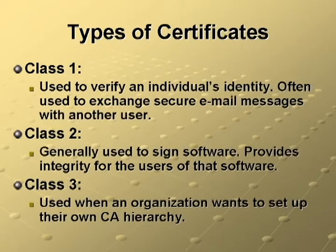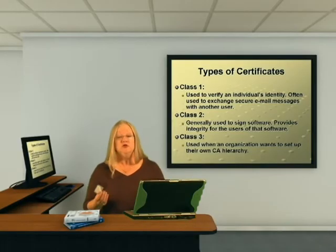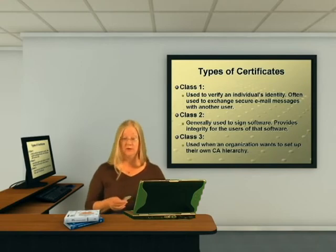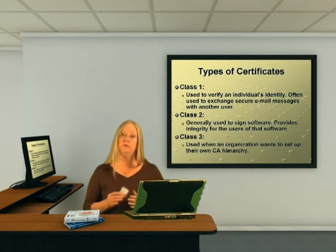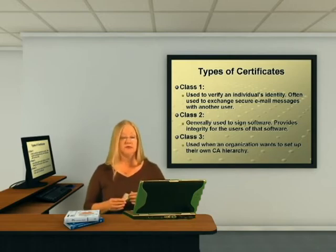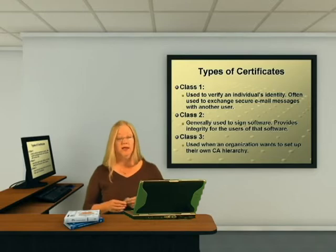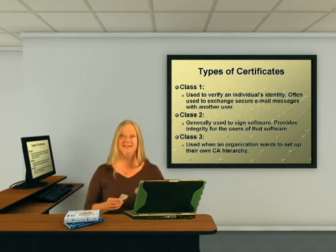Class 3 certificates are used when an organization wants to set up their own CA hierarchy and issue their own certificates in-house. Each class has different requirements for proof of identity when applying for a digital certificate, with higher level classes requiring more proof of identification. A Class 1 certificate often only requires an email address, while a Class 3 will require extensive documentation.